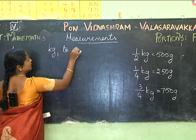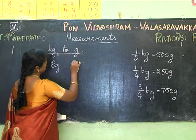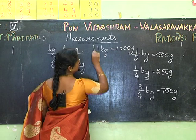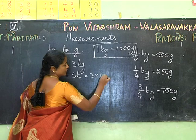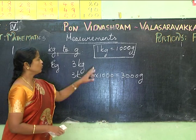Now let's convert from kg to grams. Example: 3 kg. You know that 1 kg equals 1000 grams. So 3 kg equals 3 × 1000 = 3000 grams.